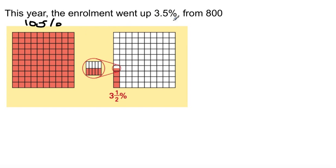What we need to do is we need to find out what 3.5% of 800 is. We need to find out what is 1%. What does one of these squares represent?